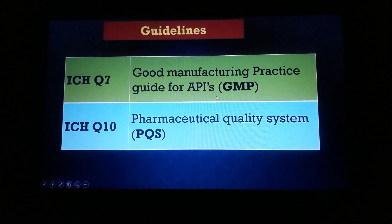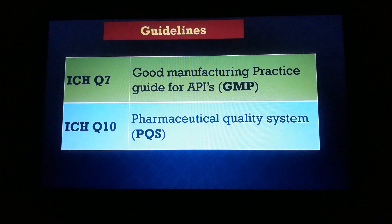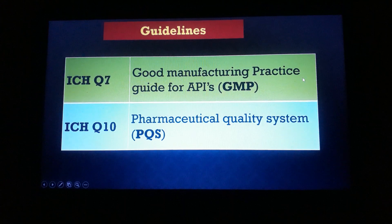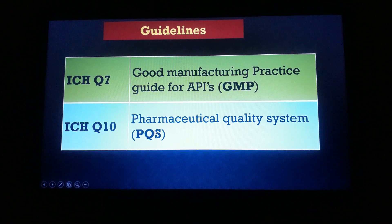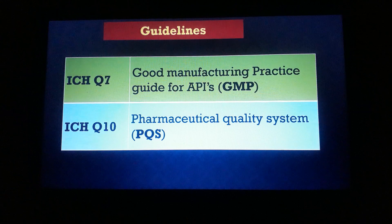Regarding guidelines for change control, there are two major ones: ICH Q7 and ICH Q10. ICH Q7 is the Good Manufacturing Practices guideline for API manufacturing, and ICH Q10 — Pharmaceutical Quality System (PQS) — also addresses change control. These are the major guidance documents on the change control process. Let's take a quick glance at what these guidelines mention.